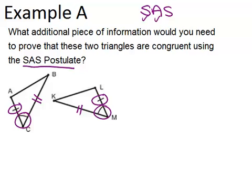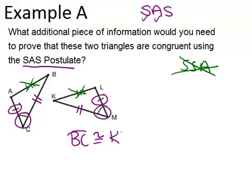If we said the other pair of sides were congruent instead, that actually would not be correct because that would be side side angle which is not a way to prove that triangles are congruent. So you can't do it that way. The only possible answer is that you have to be able to show that BC is congruent to KM. And then you would know that the two triangles are congruent by SAS.